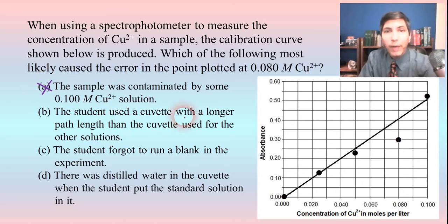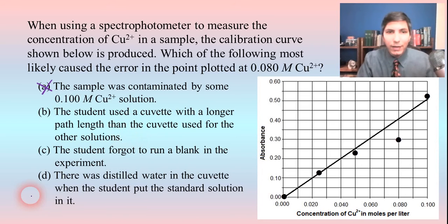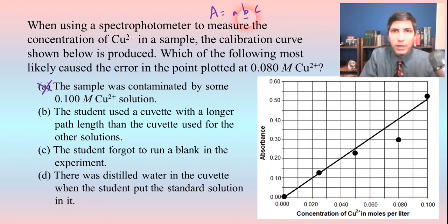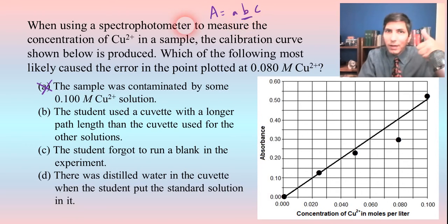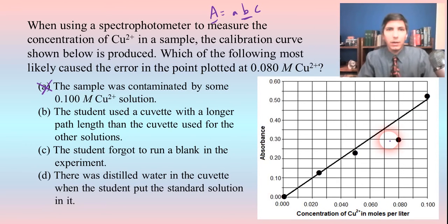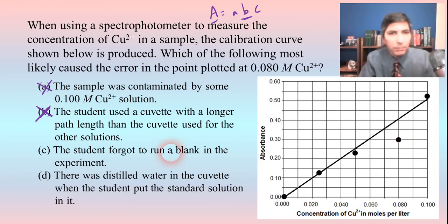Choice B says the student used a cuvette with a longer path length than the cuvette used for the other solutions. According to Beer's Law, A = εbc. If the value for b — which is the path length — goes up, the absorbance should go up as well. So a longer cuvette means higher absorbance, and that's not what we have here — the absorbance is too low. So that's not the answer either. Choice B is eliminated.